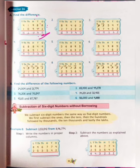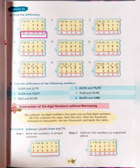100's place: 9 minus 9 is equal to 0. 1000's place: 1 minus 0 is equal to 1. 10,000's place: 4 minus 1 is equal to 3. So finally, our answer is 31,046.